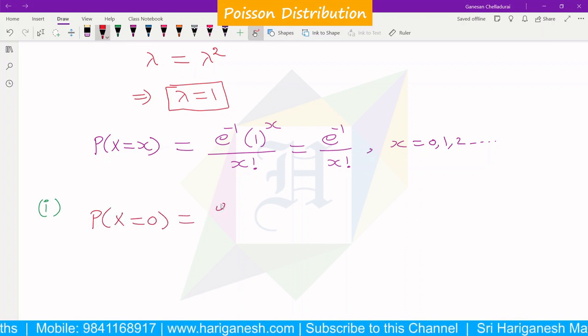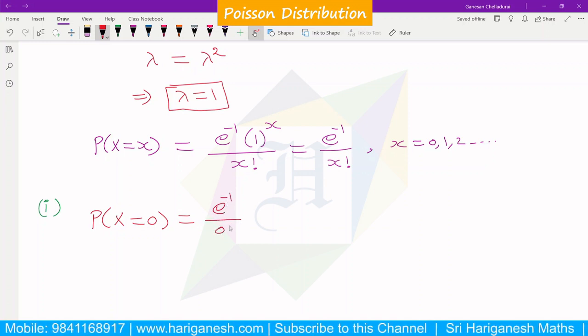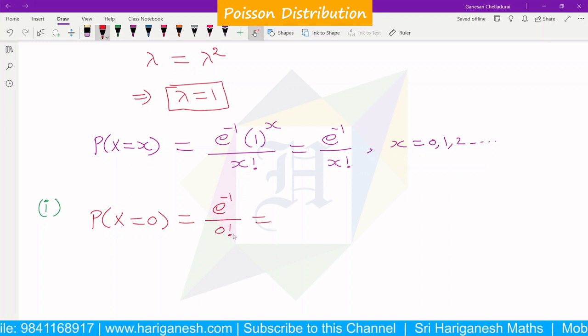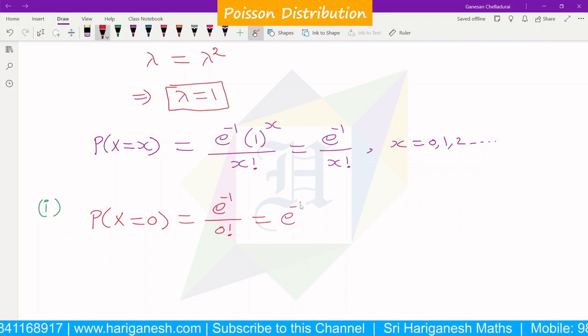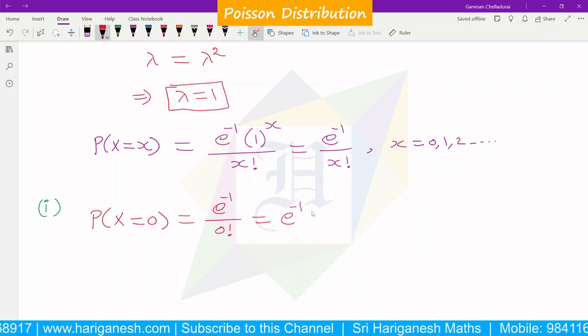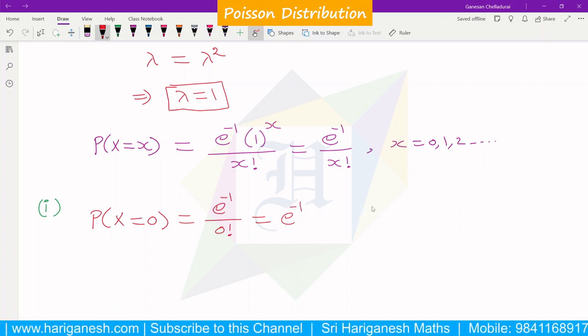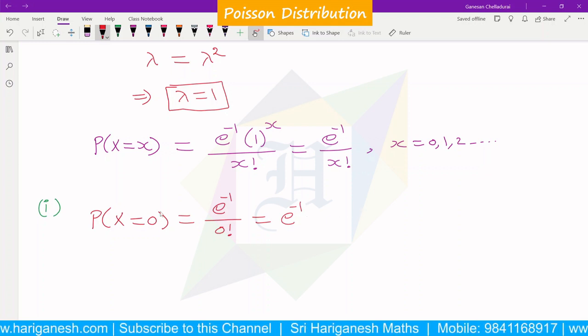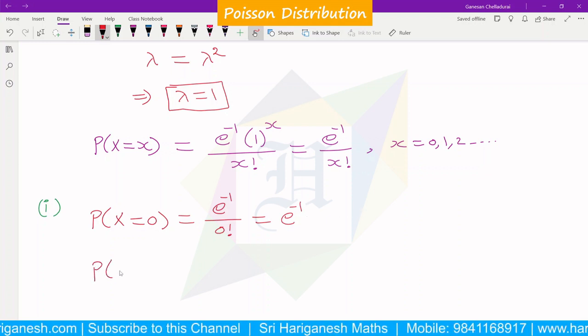P(X = 0) = e^(-1) / 0!. 0! = 1, so P(X = 0) = e^(-1). That is the answer.